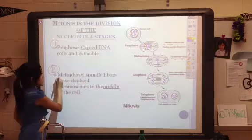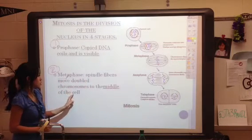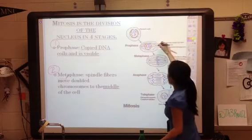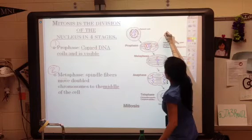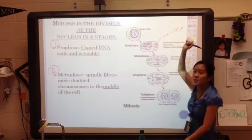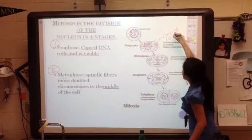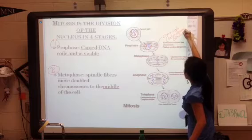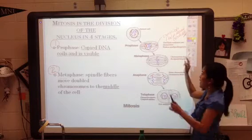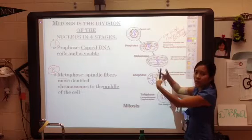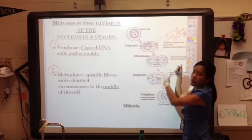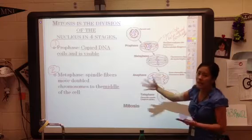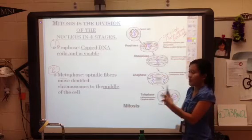In the second phase, metaphase, spindle fibers will move the double chromosomes to the middle of the cell. In animal cells, we have a little structure called a centriole that helps animal cells divide — it produces spindle fibers, which are little thread-like extensions that pull and move those chromosomes around. Meta means middle, so in metaphase we're moving chromosomes to the center.